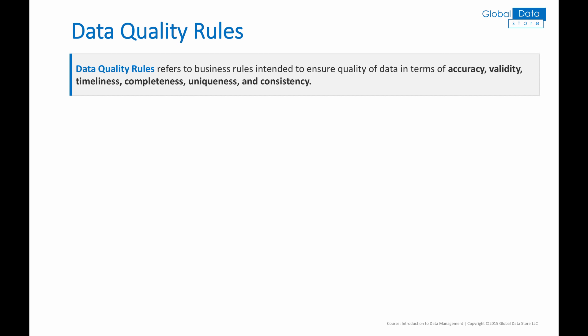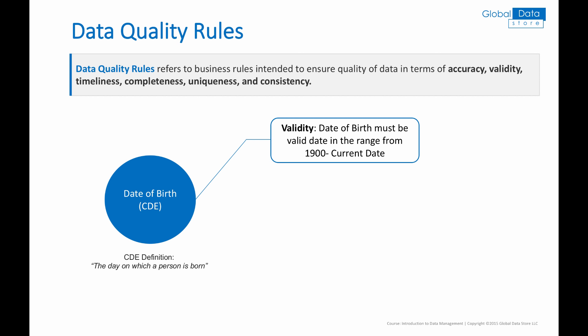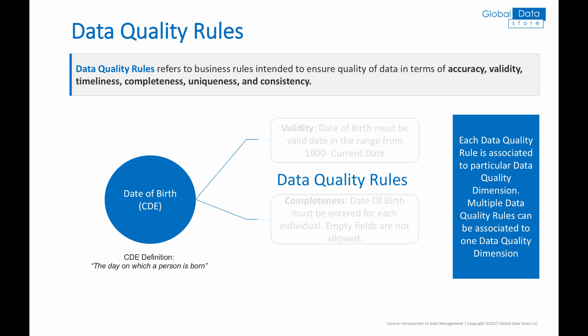The next important concept in data quality is the data quality rule. Data quality rules refer to business rules intended to ensure quality of data in terms of accuracy, validity, timeliness, completeness, uniqueness, and consistency. For instance, for the date of birth CDE, we can define the following data quality rules. Validity: birth date must be a valid date in the range from year 1900 to current date. Completeness: date of birth must be entered for each individual — empty fields are not allowed. Each data quality rule is associated to a particular data quality dimension, and multiple data quality rules can be associated to one data quality dimension.